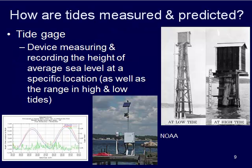So how are they measured? We use tide gauges. A tide gauge is a device that measures and records the height of average sea level at a specific location. It will also measure the height of high tide, height of the low tide, and variations in between. It will periodically be recording the water level as time goes on.